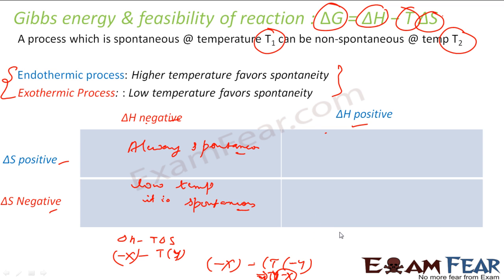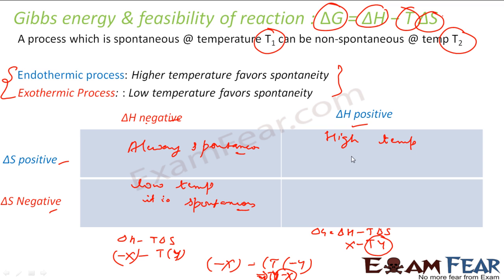Case 3: delta H is positive and delta S is also positive. Delta G equals X minus T times Y. If temperature is low, say near zero, this whole thing is positive, meaning the process is non-spontaneous. For delta G to be negative and the reaction spontaneous, temperature has to be very high. So high temperature favors spontaneity in this case.